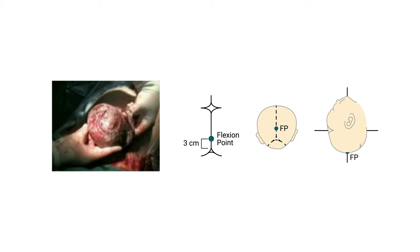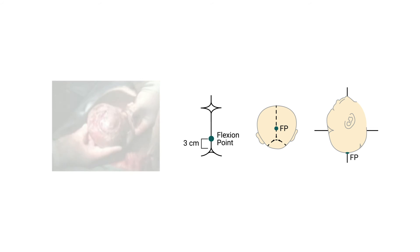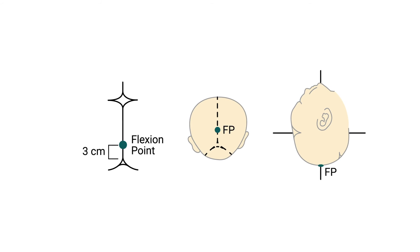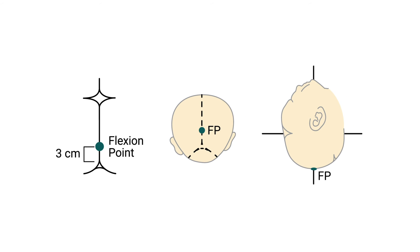A closer look at another application in which the Kiwi Omni-C cup was used shows that the cup was placed slightly anterior to the flexion point. Ideally, the cup should be placed directly on the flexion point, which is located 3 cm forward of the posterior fontanelle along the sagittal suture.